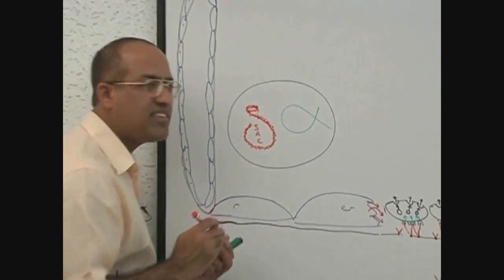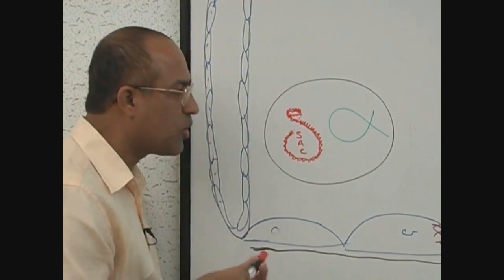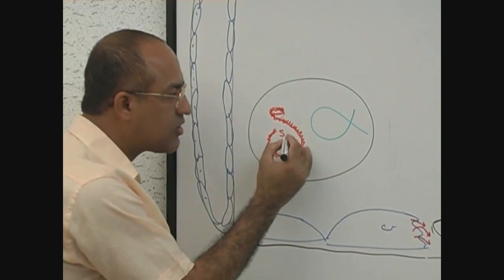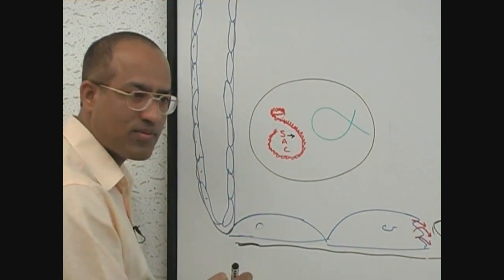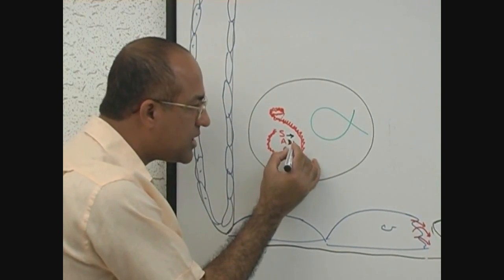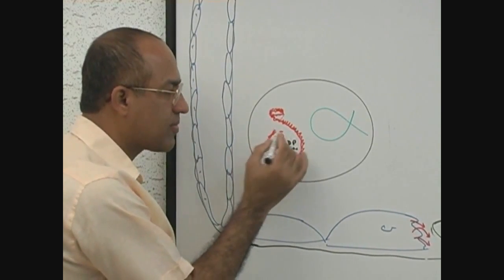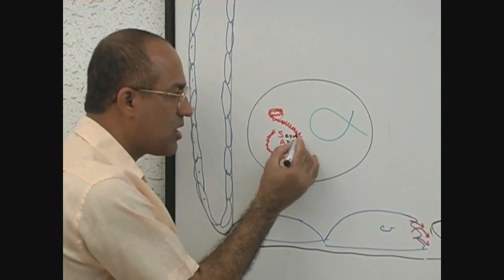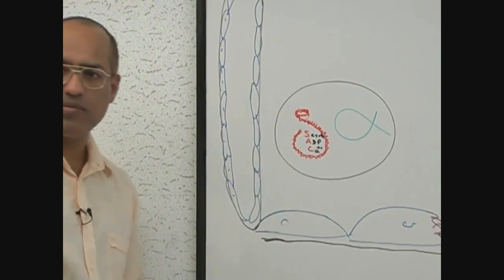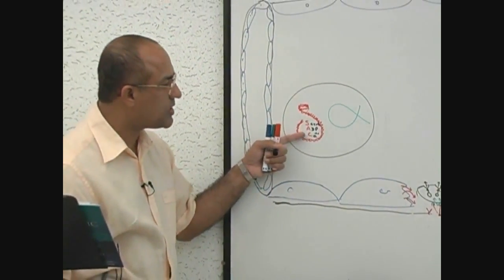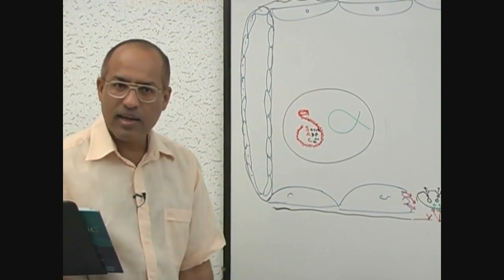They are having many substances but I want you to remember only three. SAC: S for serotonin, A for ADP, and C for calcium. So they are delta granules in the platelets which are having serotonin, ADP, and calcium.